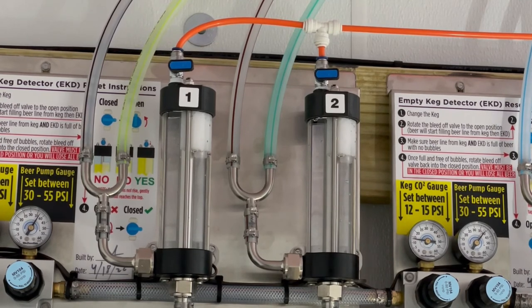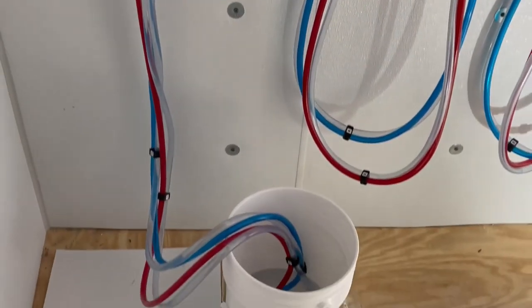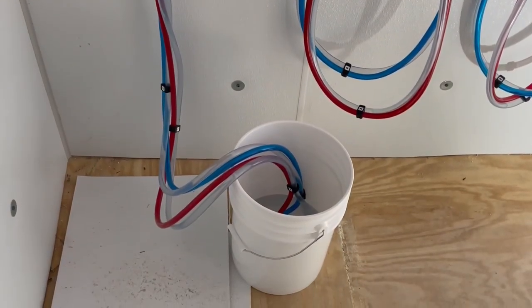Then go up to the dispenser and go into purge mode and manually run the cleaner through that way. Once you've done the lines like that, you can switch over, just refill your bucket with plain water and rinse it out using the purge mode as well.